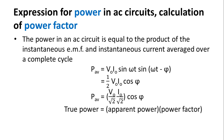That is equal to V₀ sin(ωt) × I₀ sin(ωt − φ). Here we can use the trigonometric identity sin(A) × sin(B) = [cos(A − B) − cos(A + B)] / 2. Applying this function in the expression, we get P = (V₀ × I₀) × [cos(ωt − (ωt − φ)) − cos(ωt + (ωt − φ))] / 2.